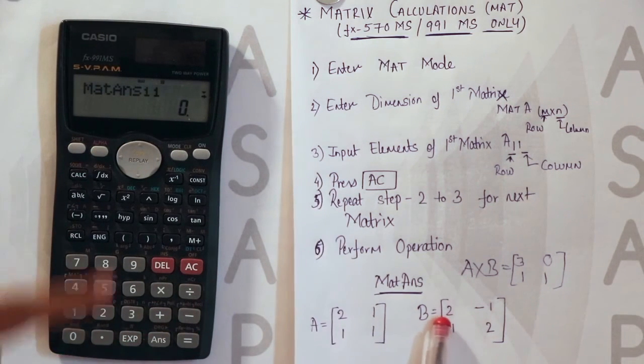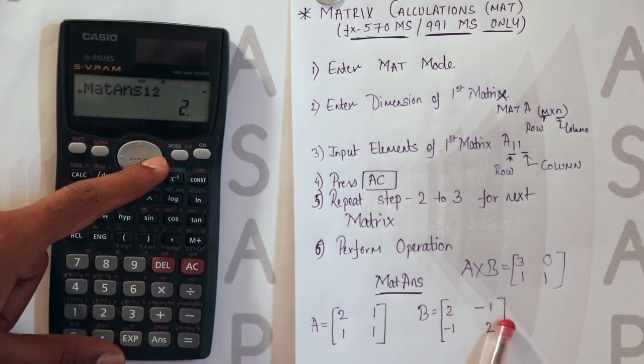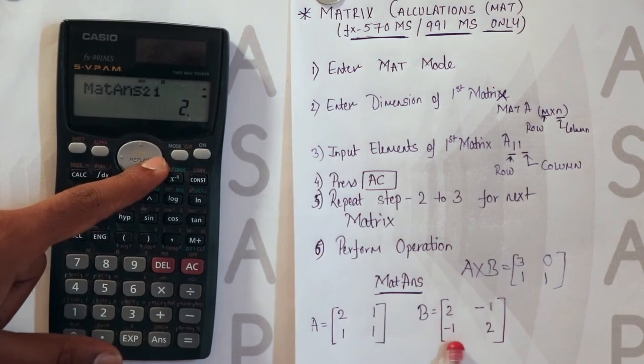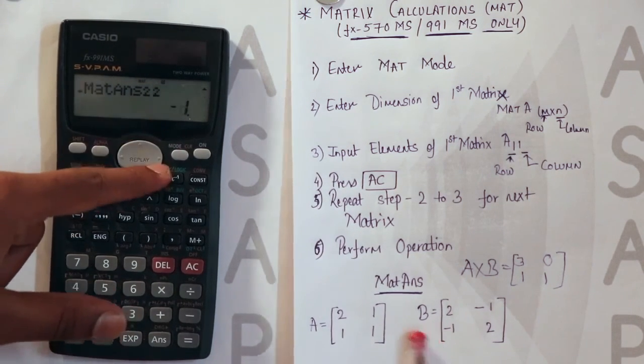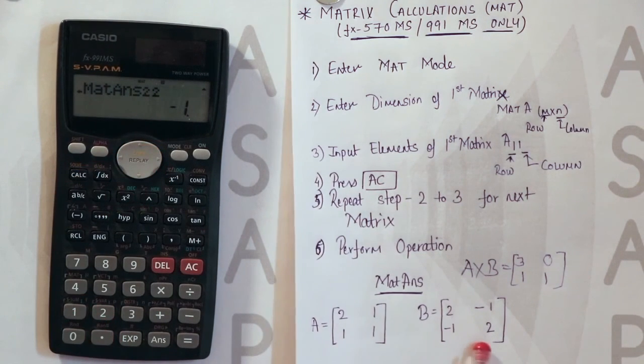2 minus 2 is 0. 1 minus of minus 1 that is 1 plus 1 that is 2. 1 minus of minus 1 that is 2. And 1 minus 2 that is minus 1.